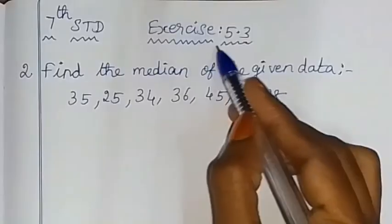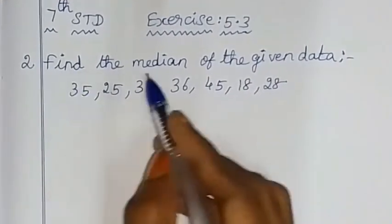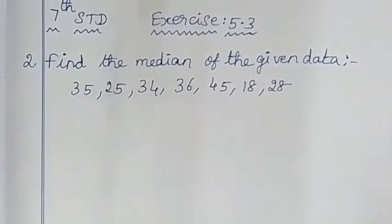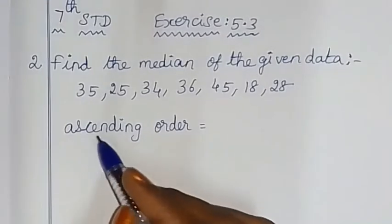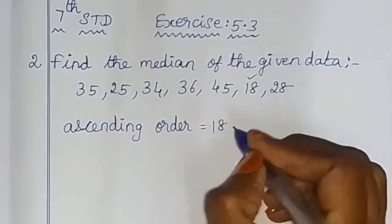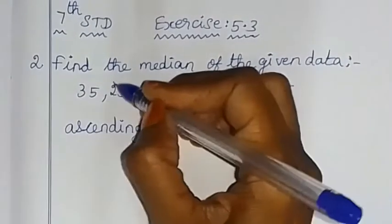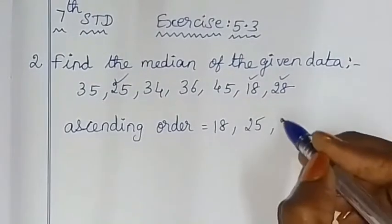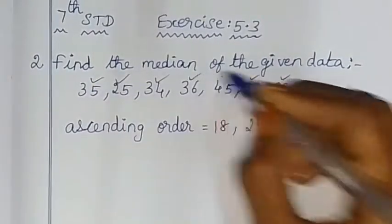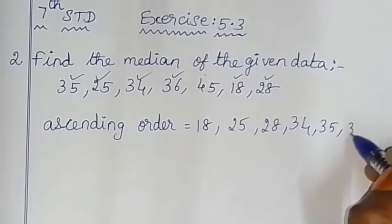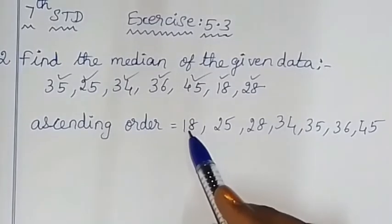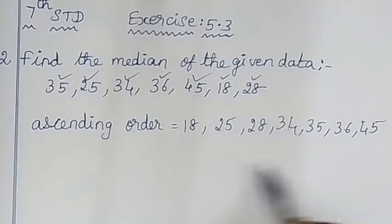Now find the median of the given data. The number of terms: 45, 36, 45 — how many data are there? 1, 2, 3, 4, 5, 6, 7 data. So there are 7 data points.